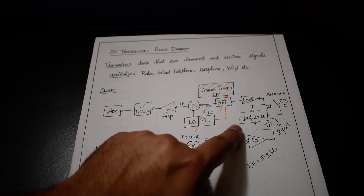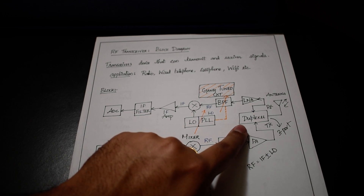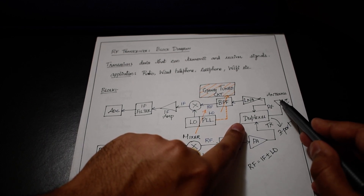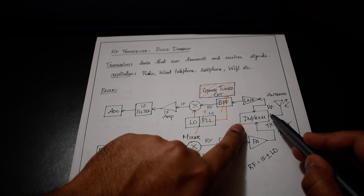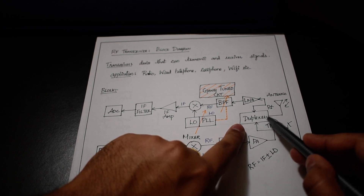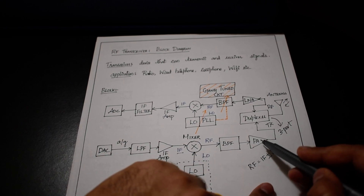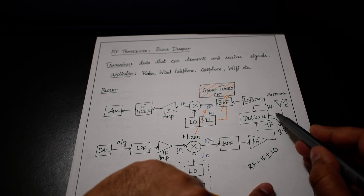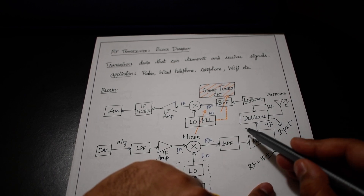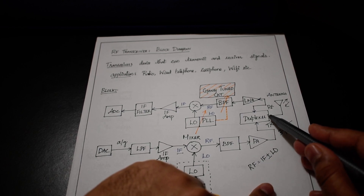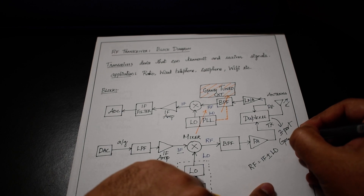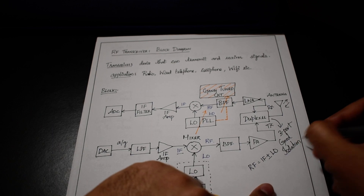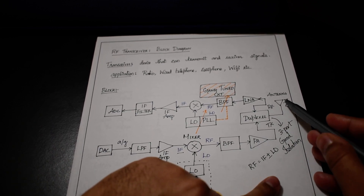The duplexer must be designed with high isolation. The reason is that whenever TX is transmitting, the signal should go toward the antenna and not come back in the opposite direction. If it comes back the other way, the power amplifier might be damaged. So in order to prevent that, the duplexer must have good isolation.